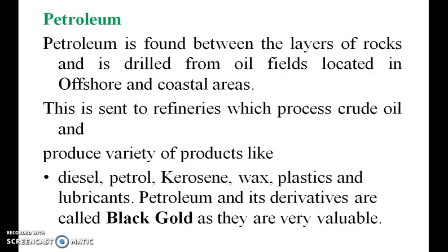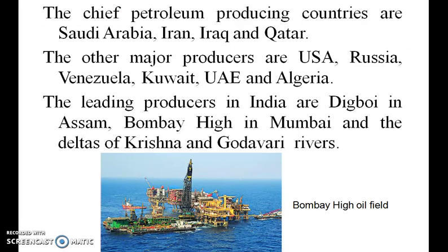Petroleum is found between the layers of rocks and is drilled from oil fields located in offshore and coastal areas. It is called black gold. Saudi Arabia, Iran and Qatar are the main sources. USA, Russia, Venezuela, Kuwait, UAE and Algeria are also producing petroleum. In India, Mumbai is a major producer.